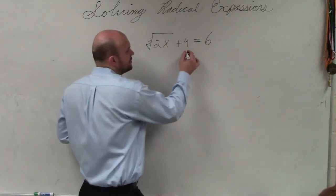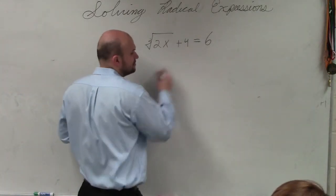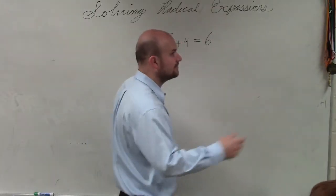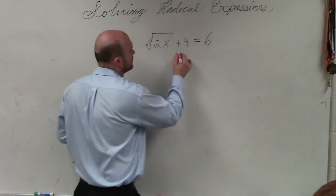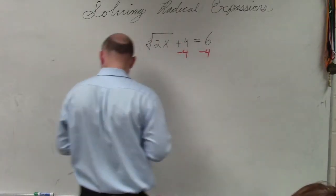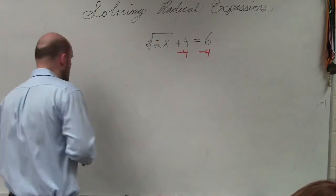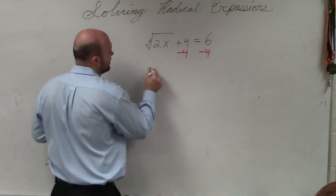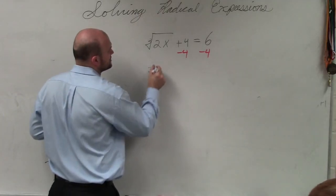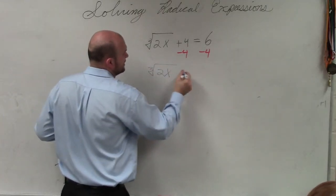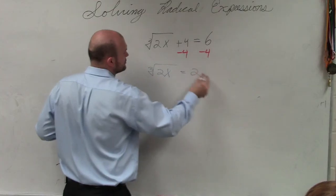So in this case, I'm going to subtract 4. Therefore, I now have the cube root of 2x is equal to 2.